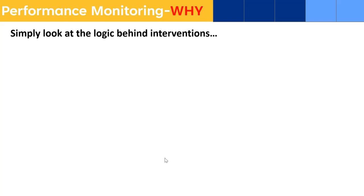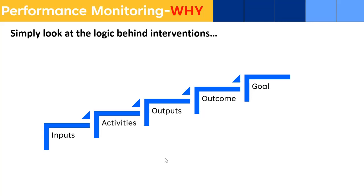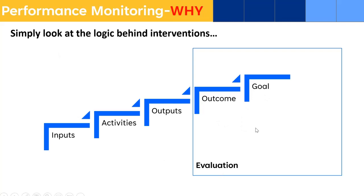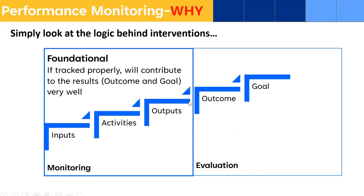Why do performance monitoring? Look at the logic behind an intervention. The logic of intervention is: input, activities, output, outcome. There are two parts. One part comes under evaluation and also under result-based monitoring — mostly under evaluation because you conduct detailed studies for them. The foundational part — input and activities — if tracked properly, will contribute to the result, outcome, and goal. If this foundational part is achieved, tracked, and monitored properly, it will be in good shape. So this is basically the monitoring part, and the other is evaluation.